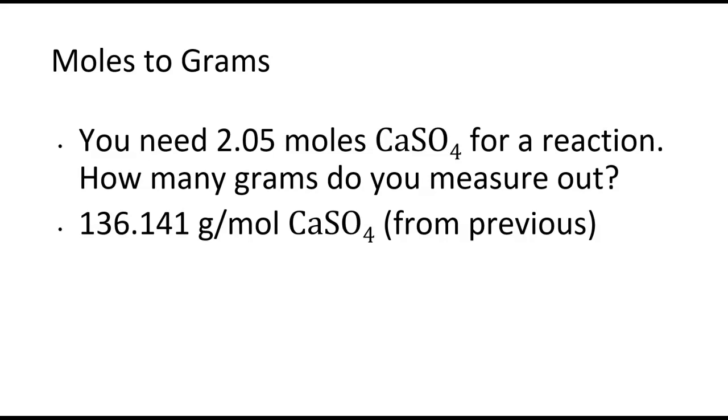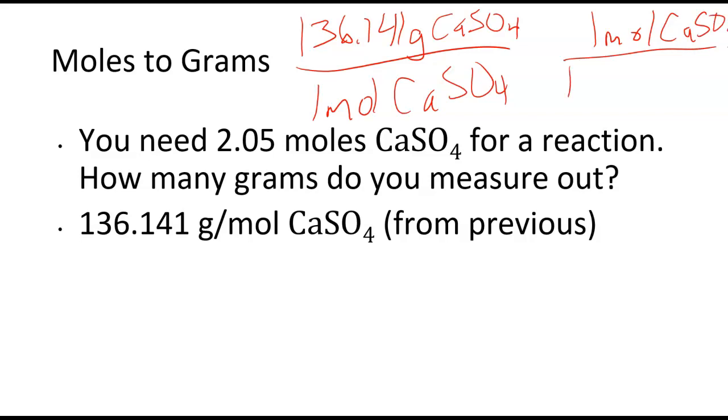It's important that when we're looking at this molar mass that we can write it as a conversion factor. So we can write that there's 136.141 grams calcium sulfate for every one mole of calcium sulfate. We can also write the inverse that for one mole of calcium sulfate, we have 136.141 grams of calcium sulfate. Notice that I'm labeling extremely well. You want to make sure that you label everything, not just whether grams or moles, but grams or moles of what? Trust me, this is going to save you a lot of time and heartache later in the course.